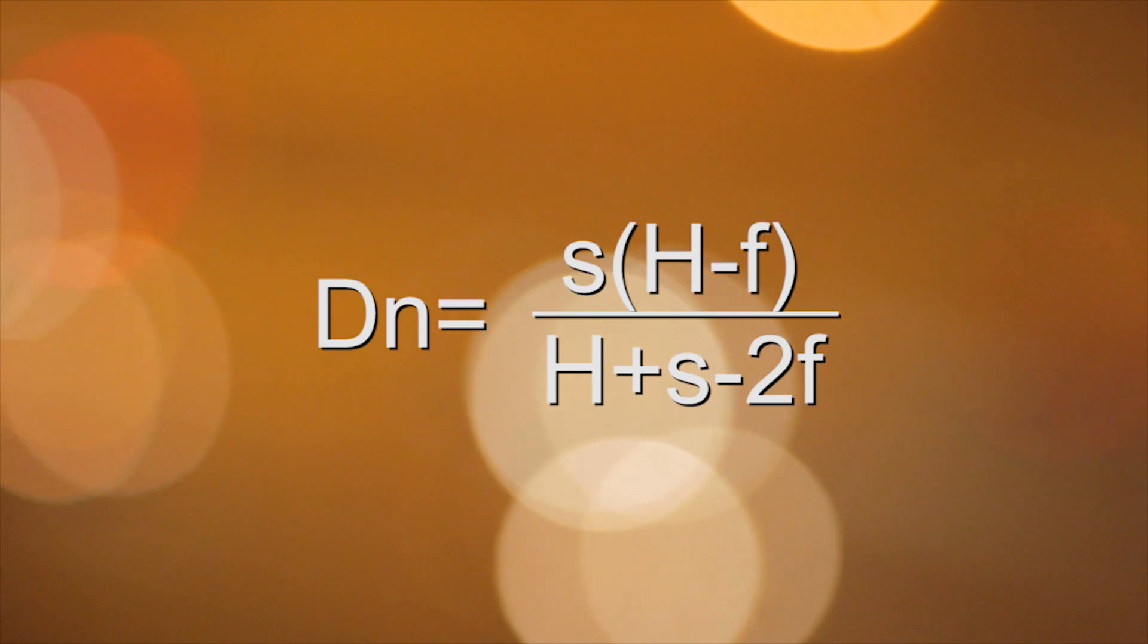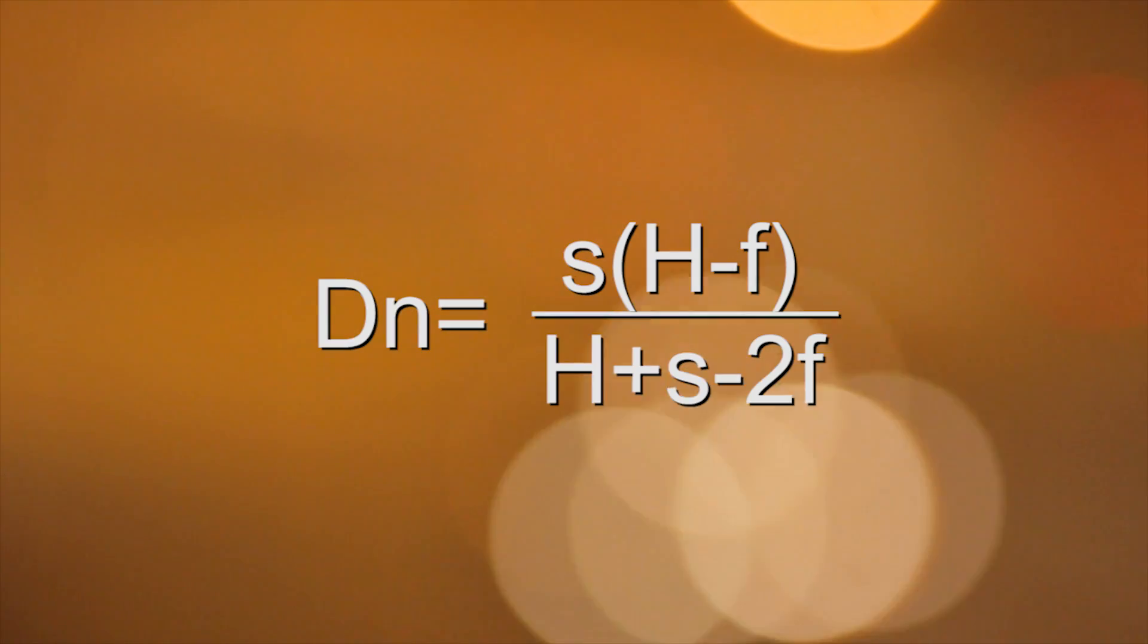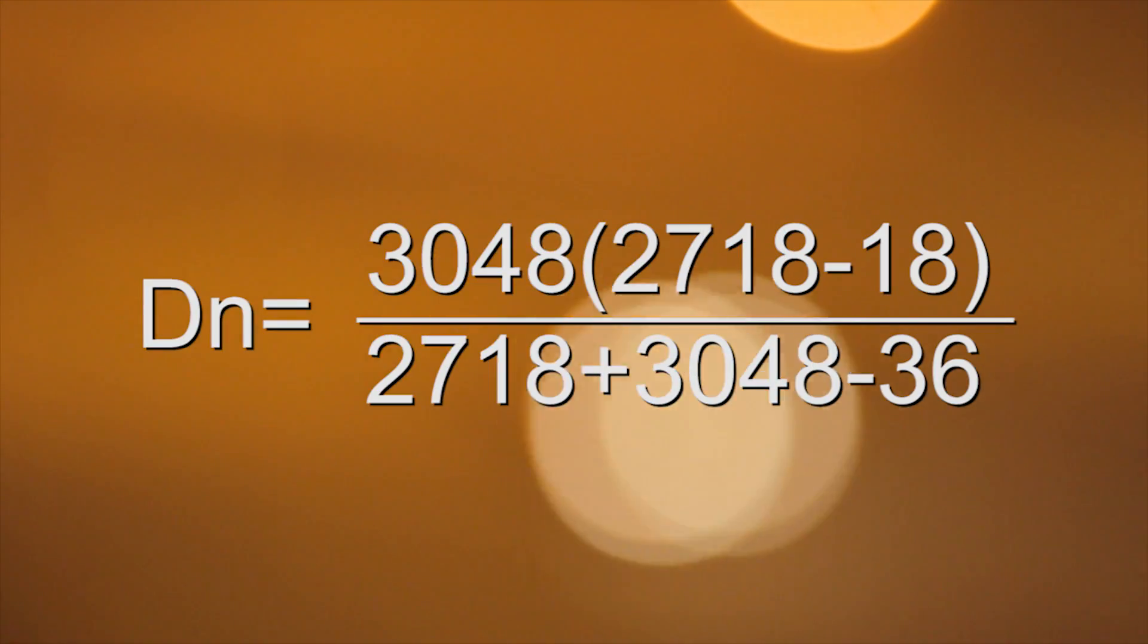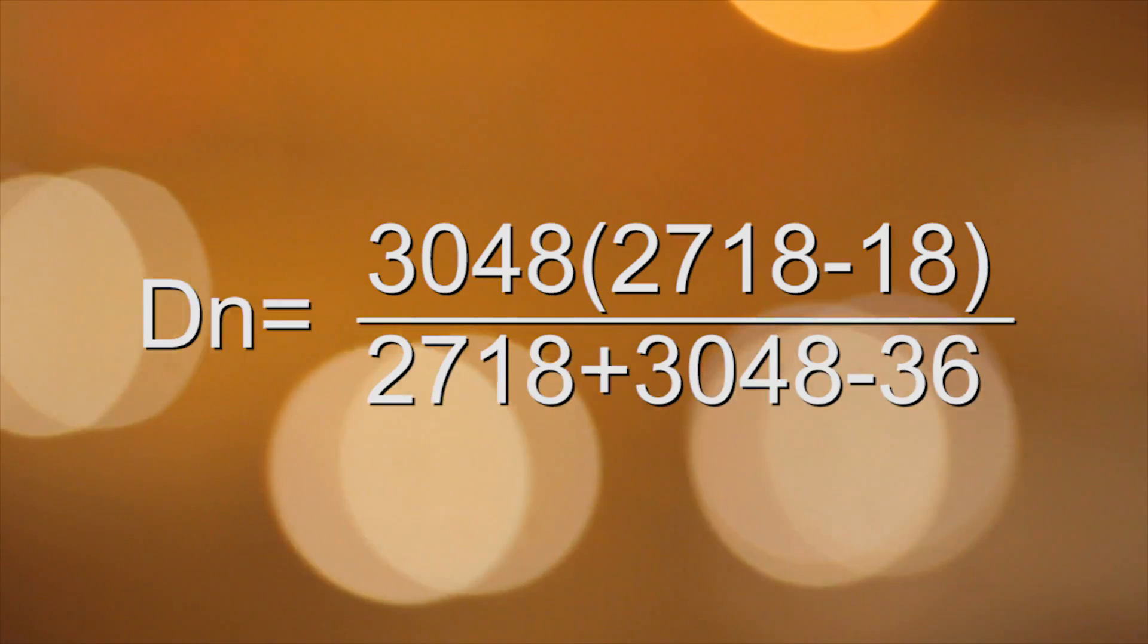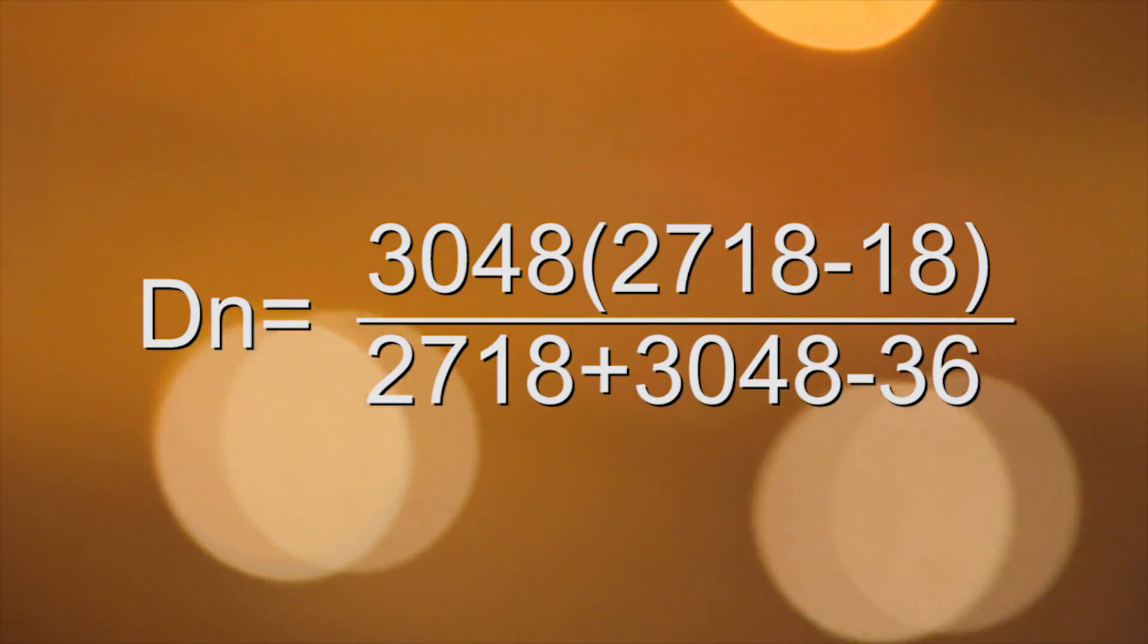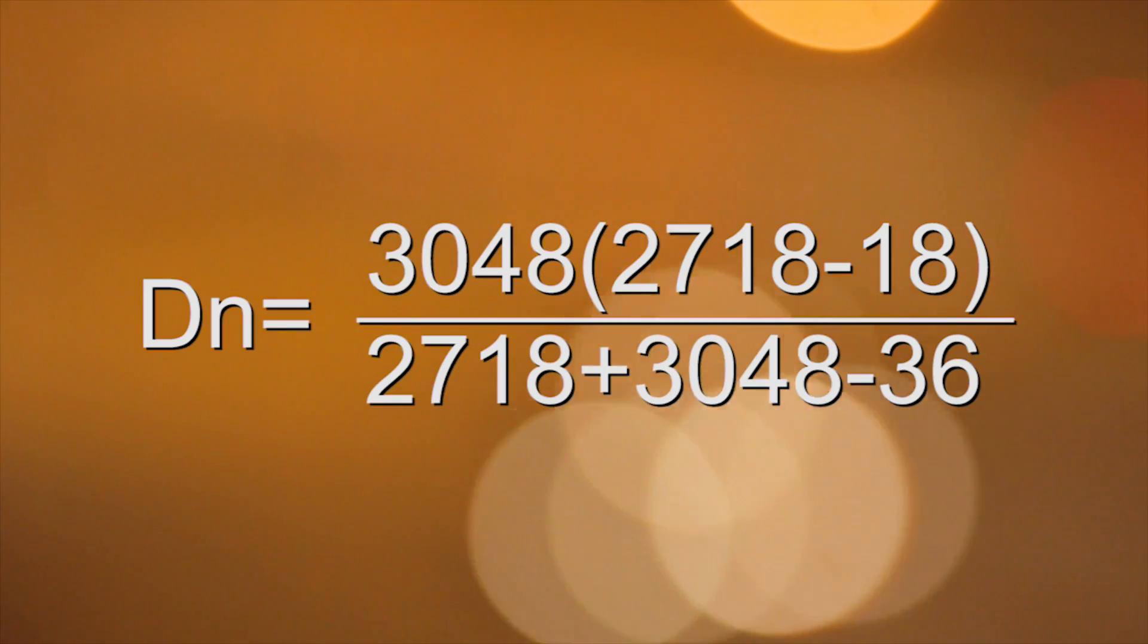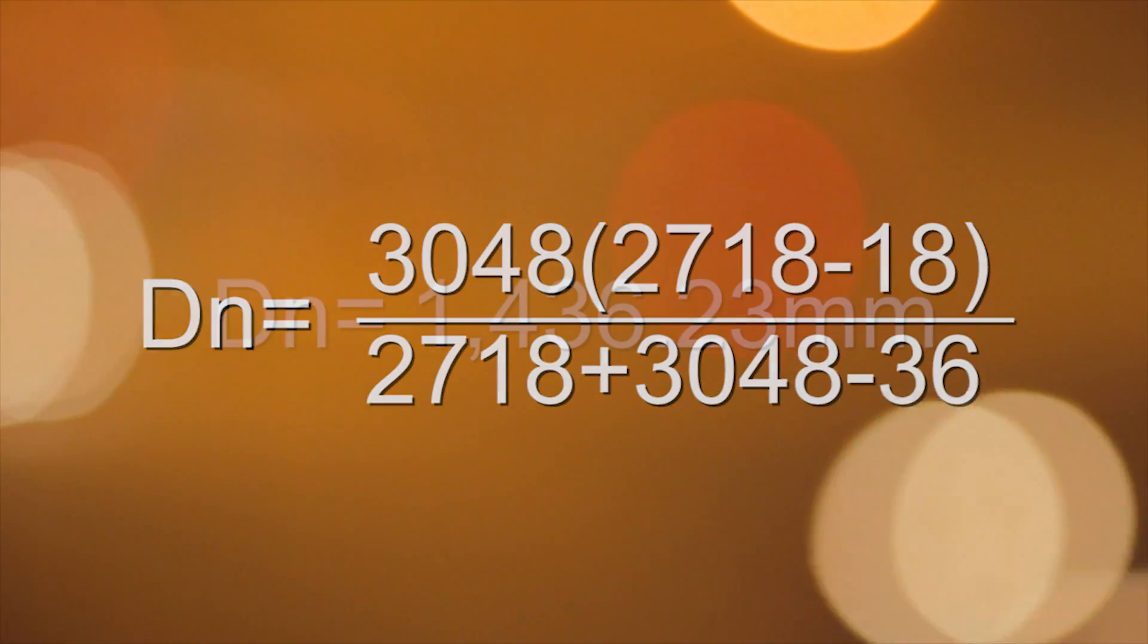For this equation we need to know the distance of our subject. Say we're taking a photo of a person and we're going to set that person, for example, 10 feet away from our camera or 3048mm. It's important that we work this equation in all millimeters and then convert to feet afterwards so that we don't mix up any of our calculations. So, plugging in 3048mm to our focal distance, 2718mm to our hyperfocal distance, and then again our focal length is going to be 18mm. Now if we plug all of that into our calculator, we'll get 1436.23mm or 4.71 feet.